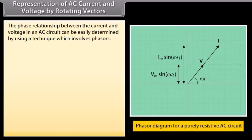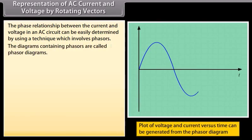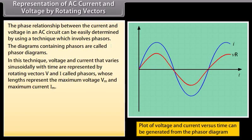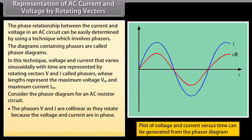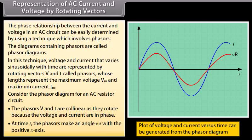Representation of AC current and voltage by rotating vectors — phasors: the phase relationship between current and voltage in an AC circuit can be easily determined using phasor diagrams. Voltage and current that vary sinusoidally with time are represented by rotating vectors V and I, called phasors, whose lengths represent the maximum voltage Vm and maximum current Im. In a resistor circuit, the phasors V and I are collinear as they rotate, since voltage and current are in phase, making an angle ωt with the positive x-axis at time t.